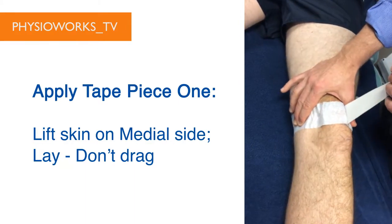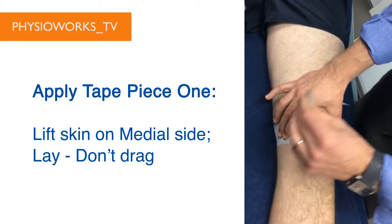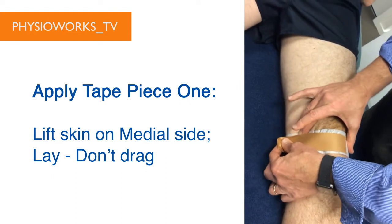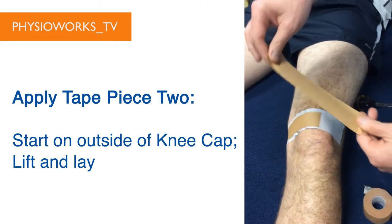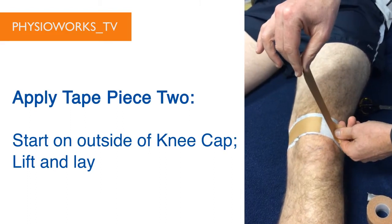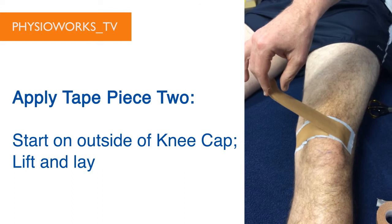get some creases as you can see here, and lay the kneecap and tape down. So we're not dragging it across. It's very important that we don't do that. The second bit of tape is a touch longer like so. We start on the outside of the kneecap.